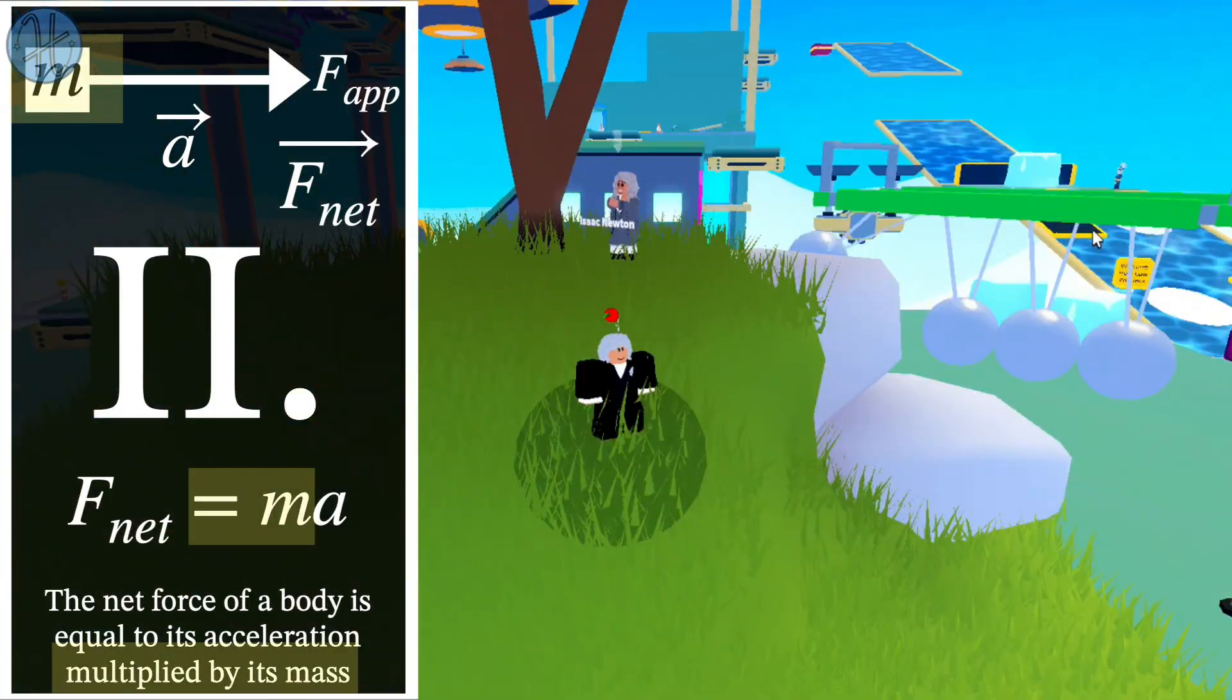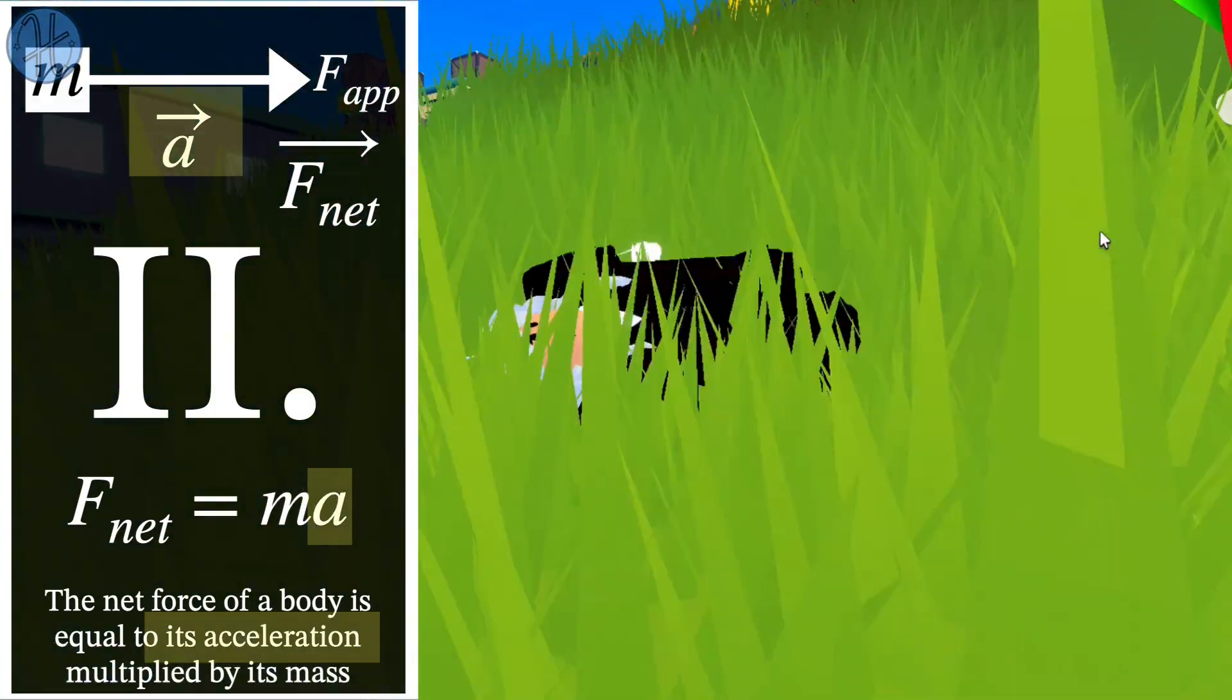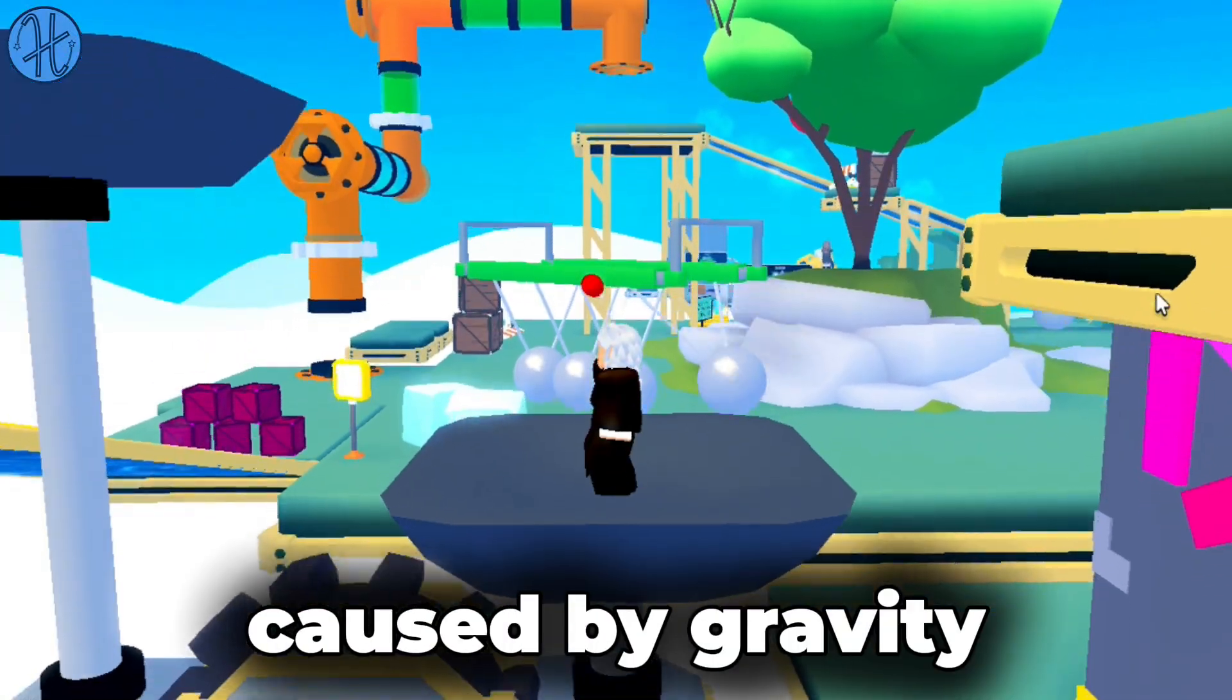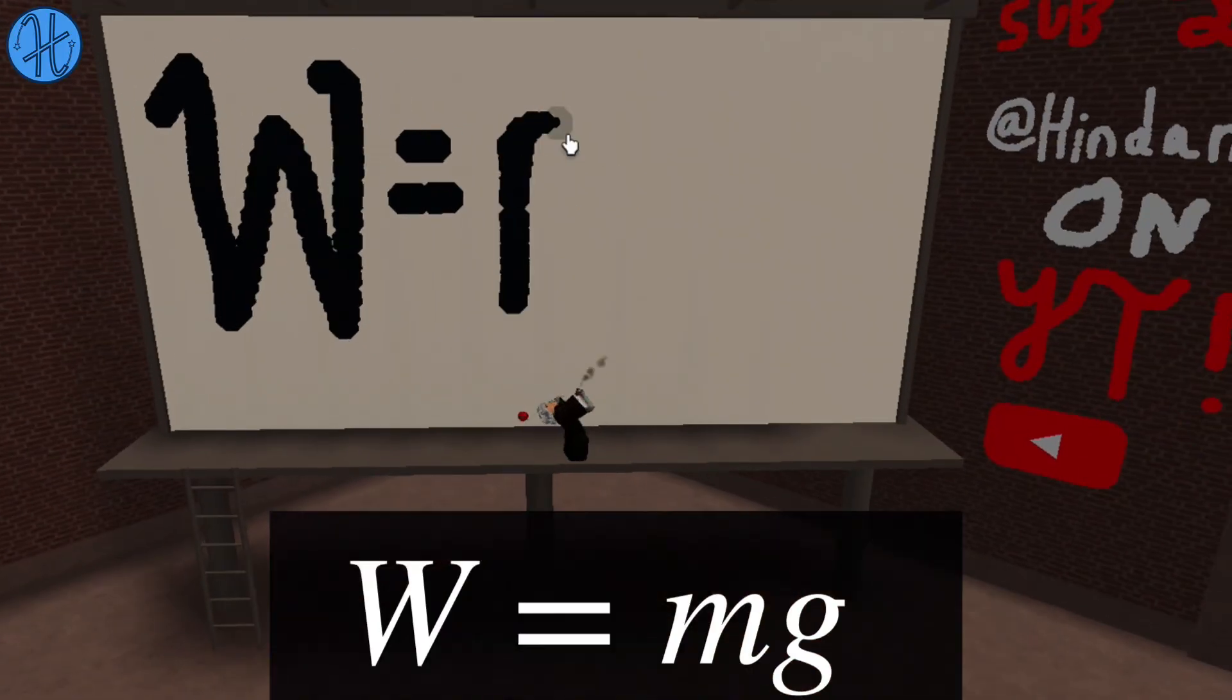Newton's second law basically says that the net force of an object is equal to the mass of that object times the acceleration of the object. For example, your weight is a force you feel on Earth caused by gravity.